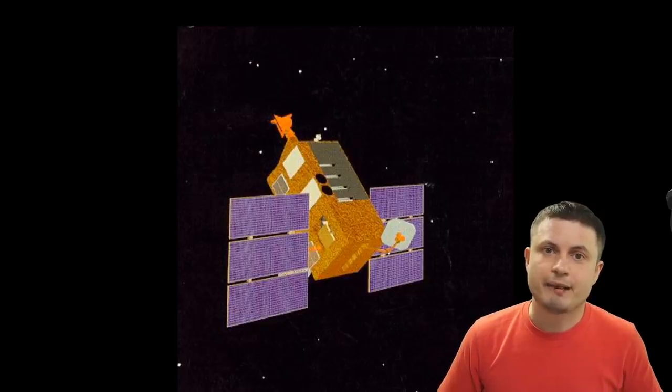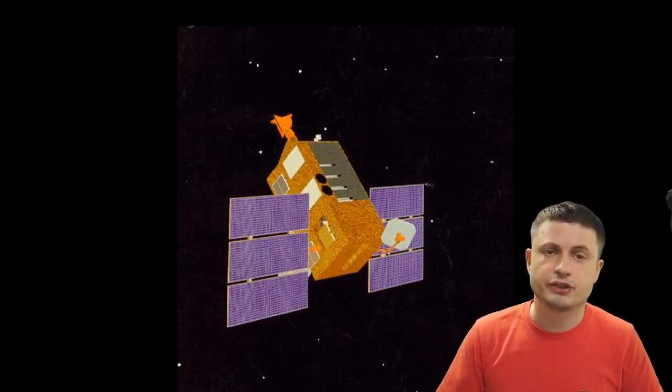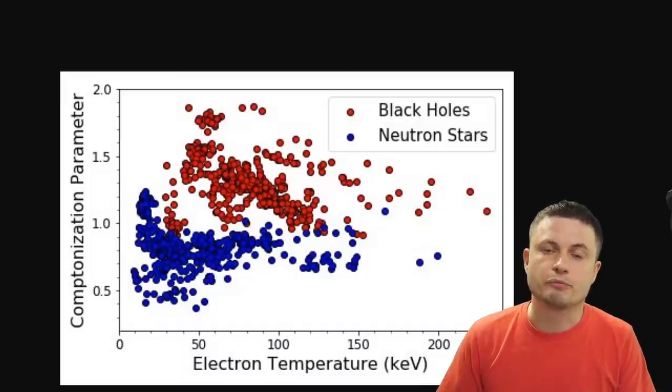But with black holes on the other hand, the material doesn't hit the surface, it just kind of falls through. And because of this, a lot less energy is generated and a lot less of it is emitted from the outside. And by using the data from the older Rossi X-ray Timing Explorer satellite that's no longer operational unfortunately, the scientists were able to identify specific values and specific features that separate black holes from neutron stars.